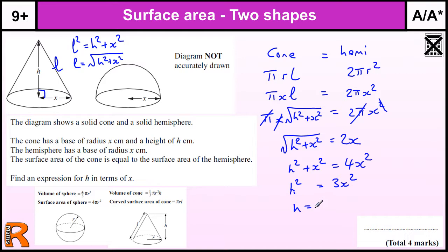So we've got H equals the square root of 3X squared. I suppose we could simplify that with root 3 times X, something like that. It's a little bit messy, so probably best just to leave it as the square root of 3X squared.